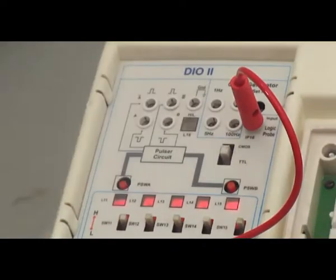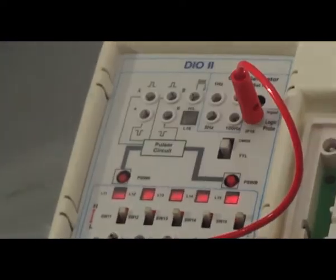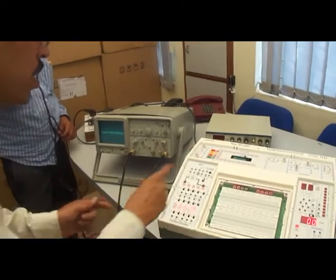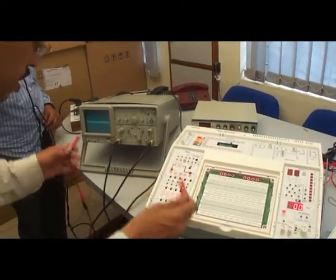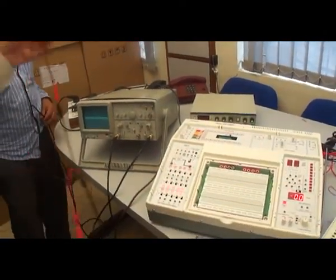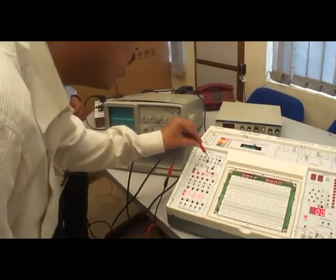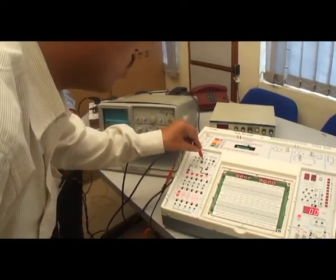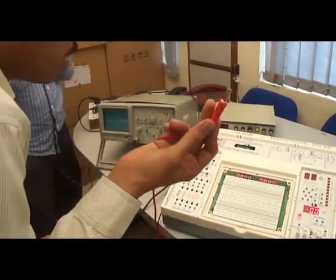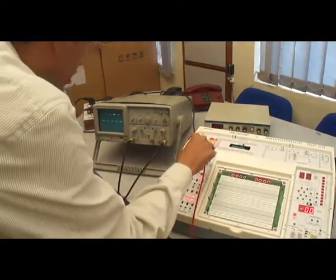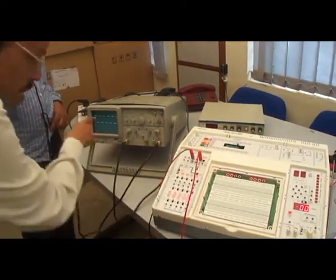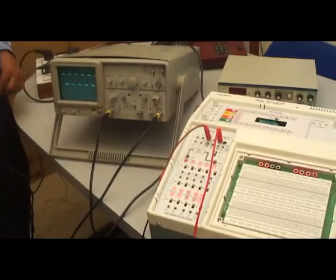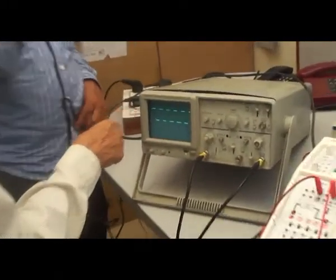The other push button is here. Ground, connect CRO positive 1 kilohertz. You can observe frequency 1 kilohertz on CRO.